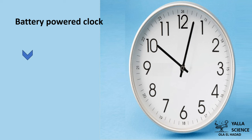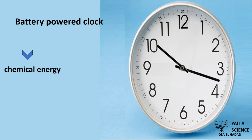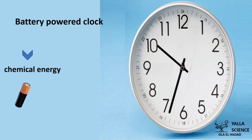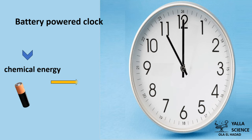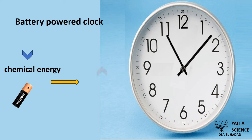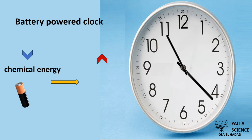What about the battery-powered clock? It uses batteries, so its input energy is chemical energy. Any movement is kinetic energy. The movement of the hands of the clock is movement, so the output energy is kinetic energy.